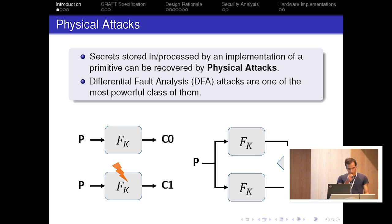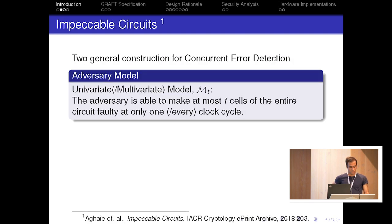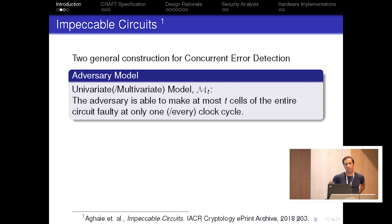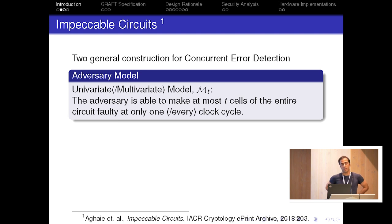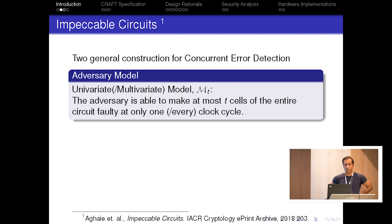More complicated countermeasures are concurrent error detections, which by adding some redundancy to the original implementation check if a fault is injected or not. In a recent paper named Impeccable Circuits, we introduced a technique that guarantees detection of fault injections up to a certain number in any place of the implementation, considering two adversary models where the attacker can make at most some number of injections in any place, either in one clock cycle or every clock cycle.